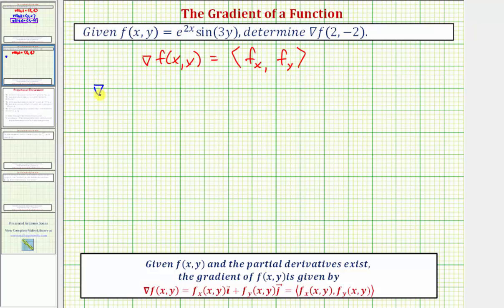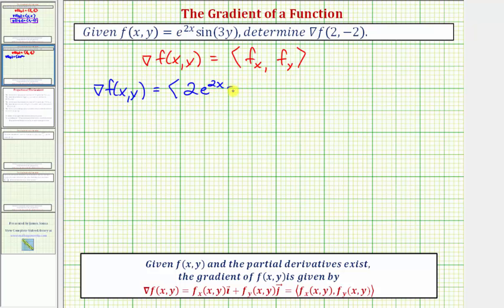The gradient of f would have an x component where we differentiate e raised to the power of 2x times sine 3y with respect to x, treating y as a constant. Because the derivative of e^(2x) with respect to x is e^(2x) times 2, the partial with respect to x is 2e^(2x) times sine 3y.